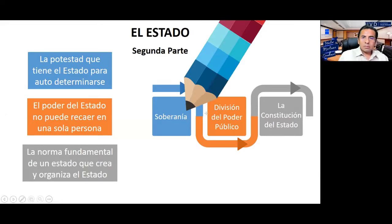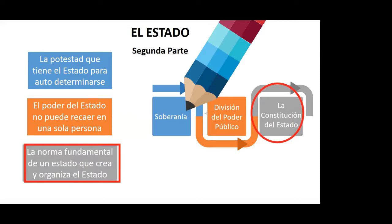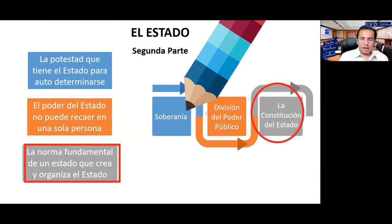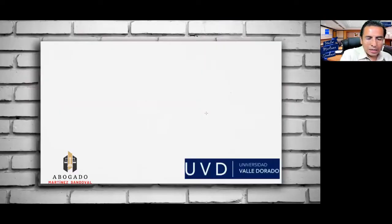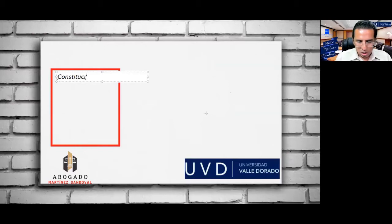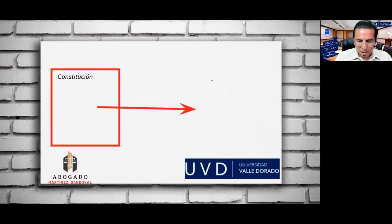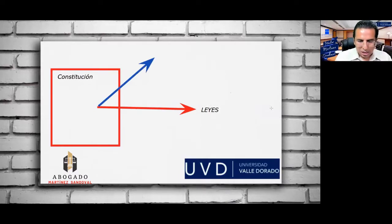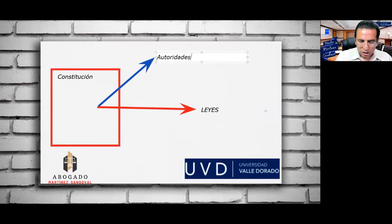La constitución es la norma fundamental. El poder legislativo es la creación de leyes, y el judicial es la interpretación y aplicación de la norma. De esta constitución vamos a crear las leyes, vamos a establecer la competencia de las autoridades, y vamos a reconocer los derechos humanos de las personas.